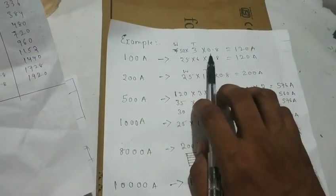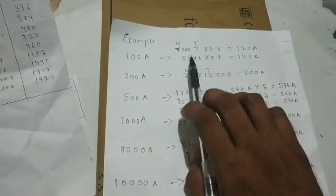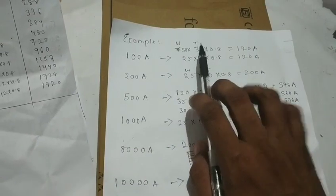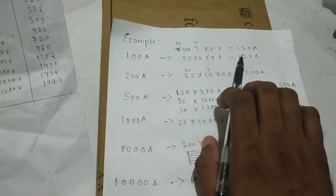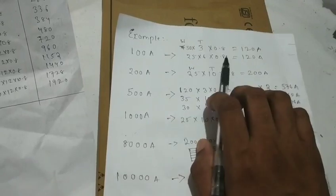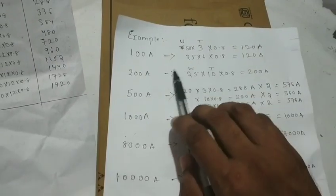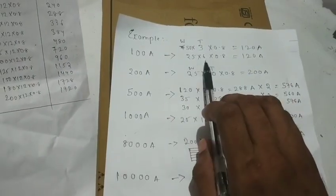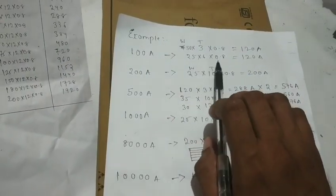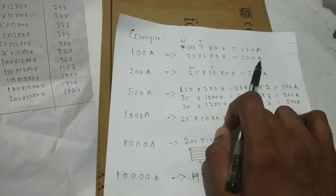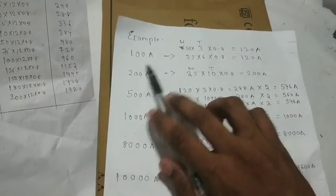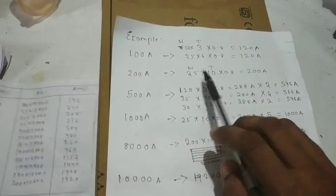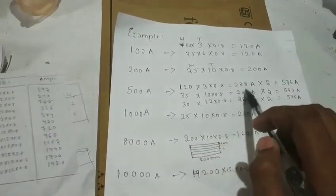50mm width and 3mm thickness: 50 × 3 × 0.8 = 120 amps. That gives us coverage for 100 amps. Also, 25mm width and 6mm thickness: 25 × 6 × 0.8 = 120 amps. Both combinations give 120 amps, which is sufficient for 100 amps.